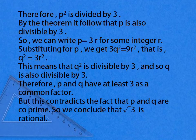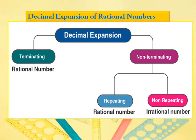Now next is decimal expansion of rational numbers. Decimal expansion means we have two types: terminating and non-terminating. Terminating are rational numbers. Non-terminating are repeating and non-repeating, which are rational numbers. And non-repeating numbers are irrational numbers.